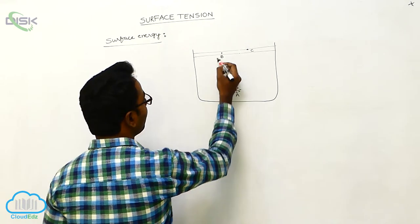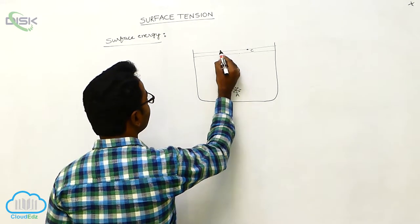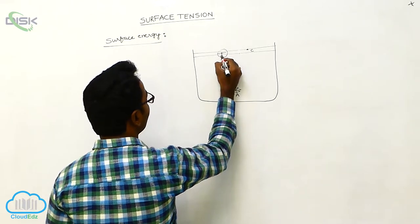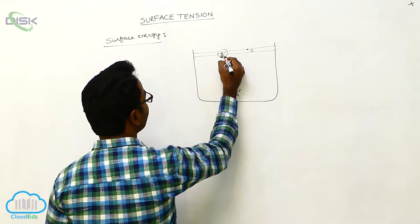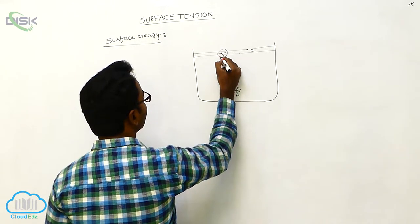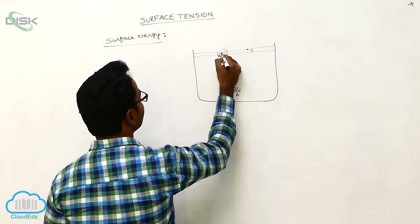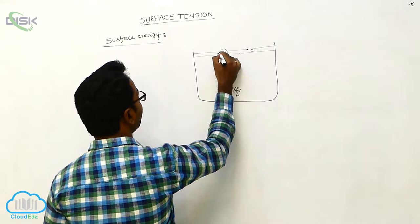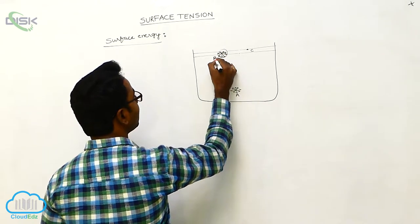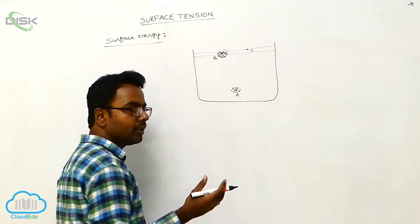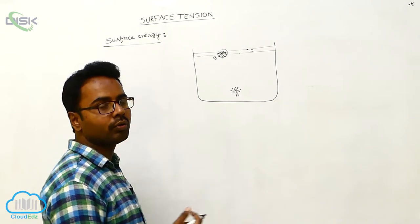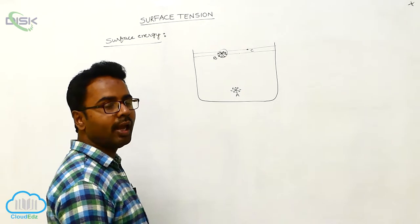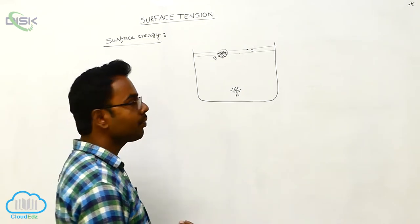For molecule B, the lower half is full of molecules but the upper half has fewer molecules. This means the upward force on molecule B is less and the downward force is more. Because the downward force is greater, molecule B experiences a resultant downward force.